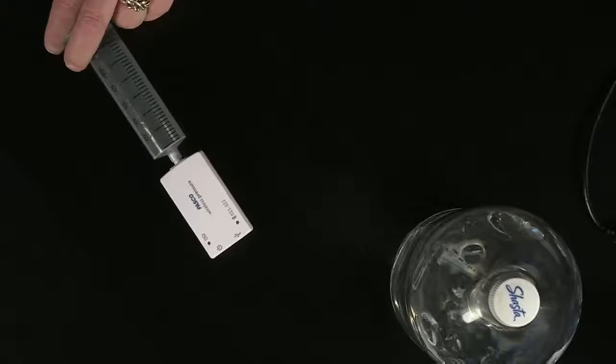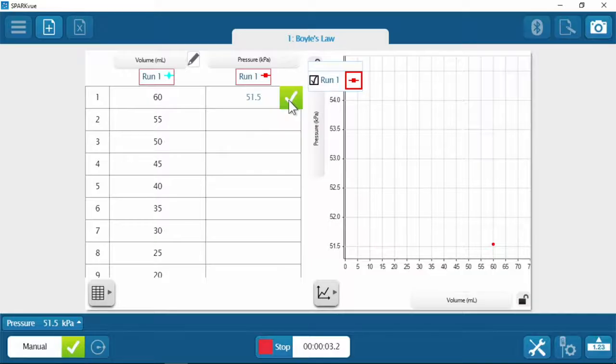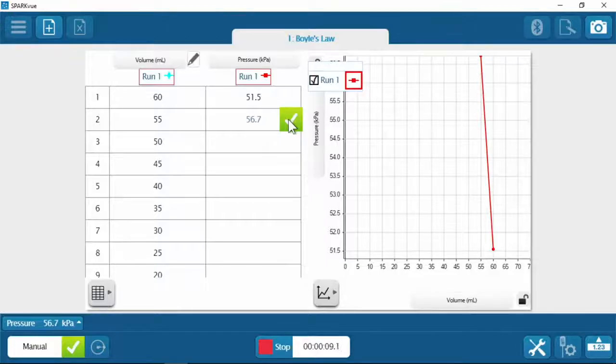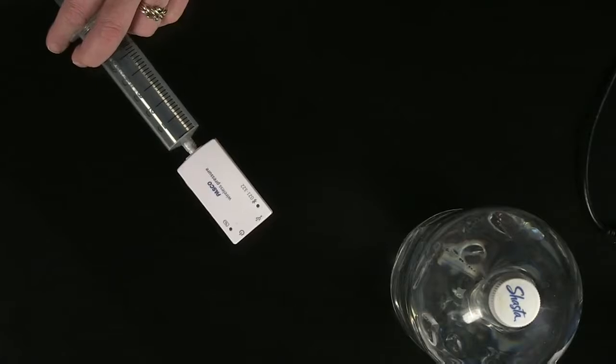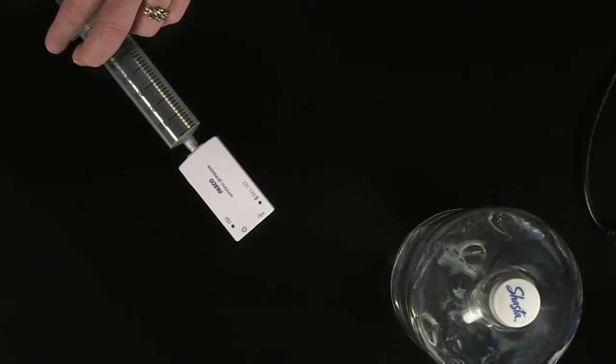All right, I'm on 60. Now you're going to move that plunger to 55. Okay, I'm good there. And 50. Okay, let it sit for a second because I can change the temperature as well when I push or pull on this thing. That is a very good observation.